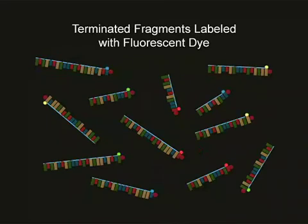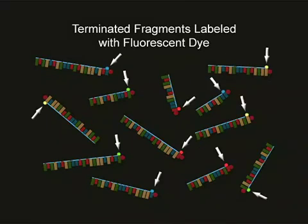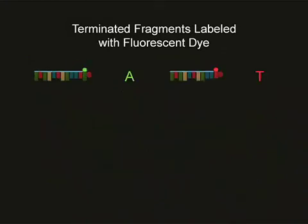The fluorescently labeled terminator nucleotides each have their own specific color. A is green, T is red, G is yellow, and C is blue.